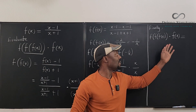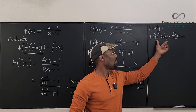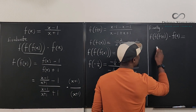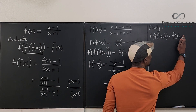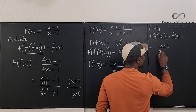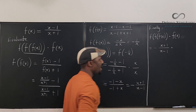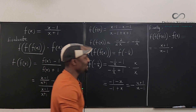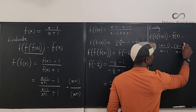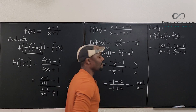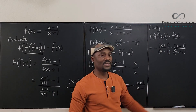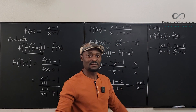Finally, we just need to multiply f(f(f(x))) by f(x). We already have f(f(f(x))) = −(x+1)/(x−1), and f(x) = (x−1)/(x+1). Multiplying these together, (x+1) cancels with (x+1) and (x−1) cancels with (x−1), leaving a negative sign. So the answer is negative one.